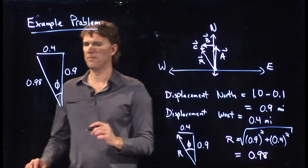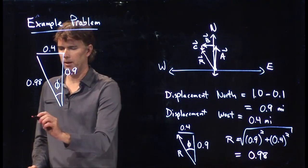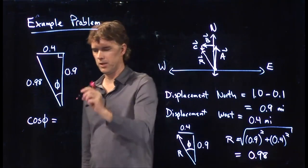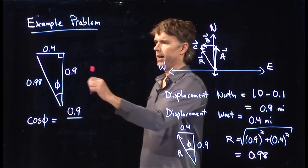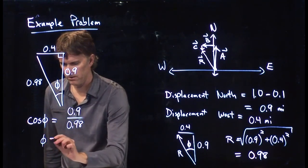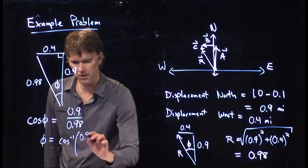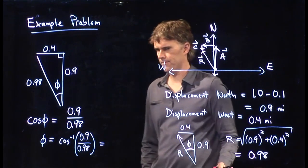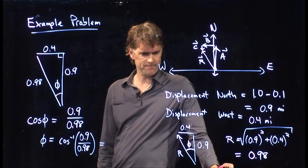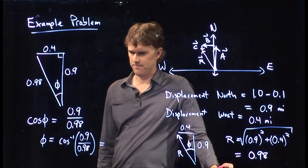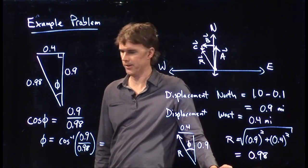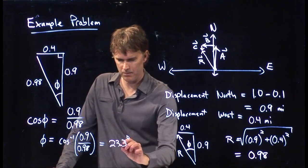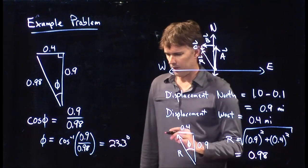We can pick any trig relation we want. Let's pick cosine of phi. The right angle is there, so cosine of phi equals the adjacent, 0.9, divided by the hypotenuse, 0.98. Taking the arc cosine of that, it should be a fairly small angle — on the order of 15 degrees. The class gets 23.3 degrees.